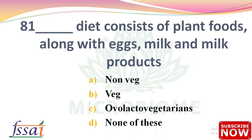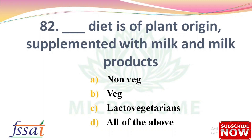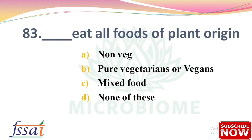Next: Dash diet consists of plant foods along with eggs, milk, and milk products — options: non-veg, veg, ovo-lacto vegetarians, none of these. The right answer is option C, ovo-lacto vegetarians. Next: Dash diet is of plant origin supplemented with milk and milk products — the right answer is option C, lacto vegetarians. Next: Dash eat all foods of plant origin — the right answer is option B, pure vegetarians.